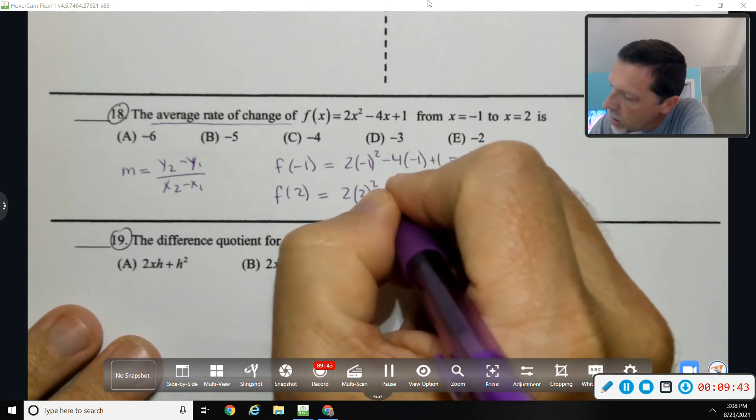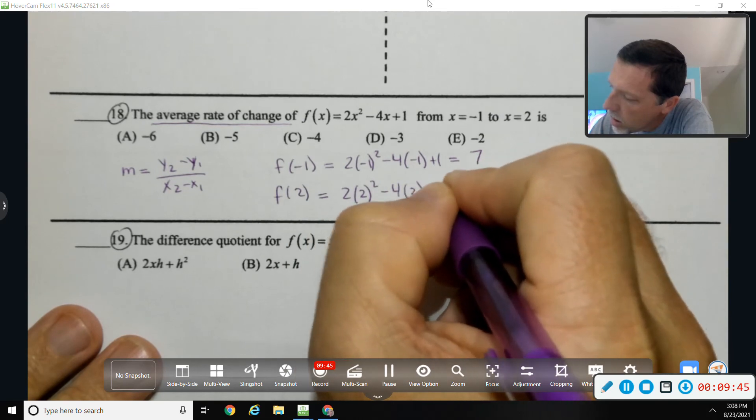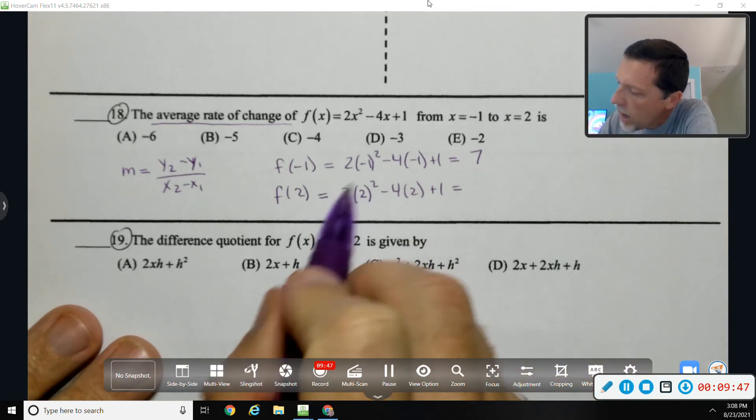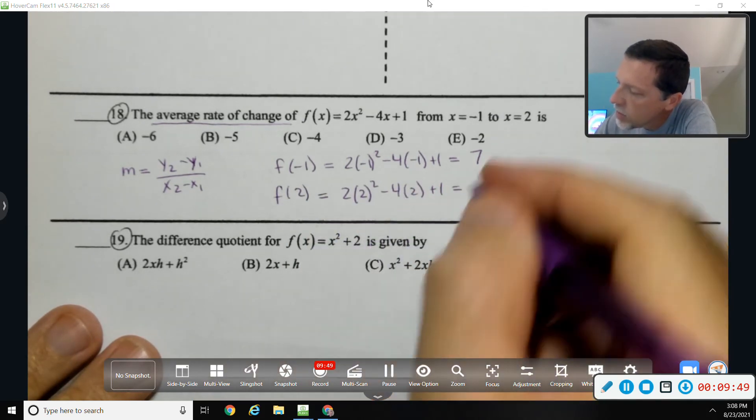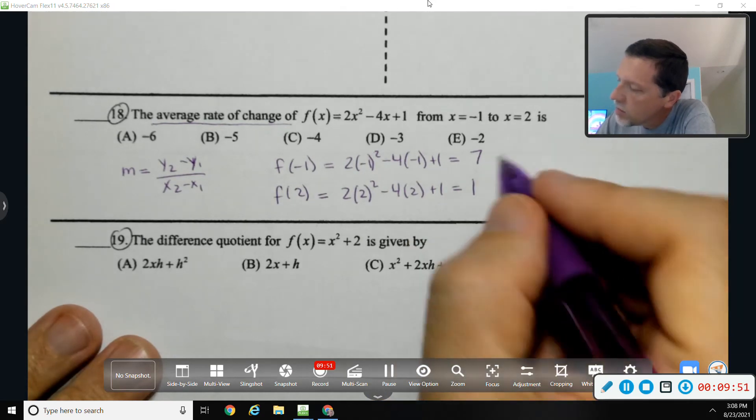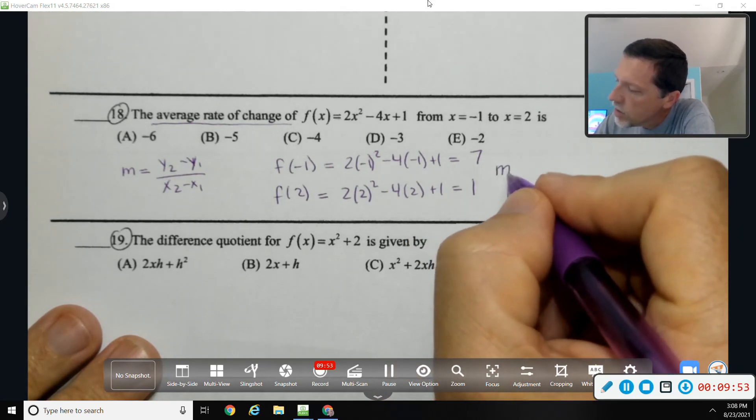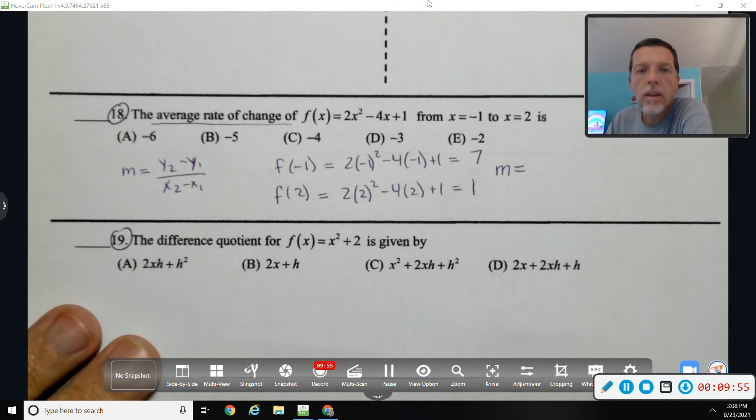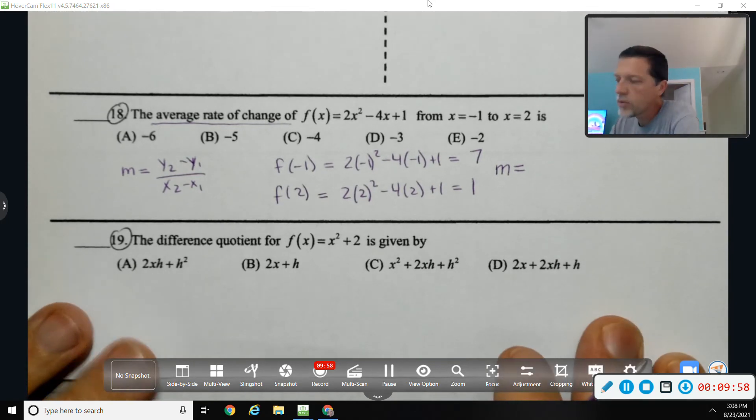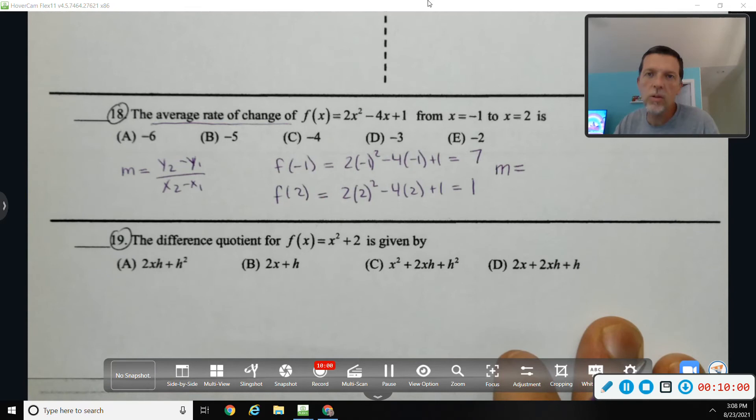Plug in two: I get eight minus eight plus one, which is one. So the slope is y2 minus y1 over x2 minus x1, and it doesn't matter which one you call it one and two, as long as you keep the order the same.